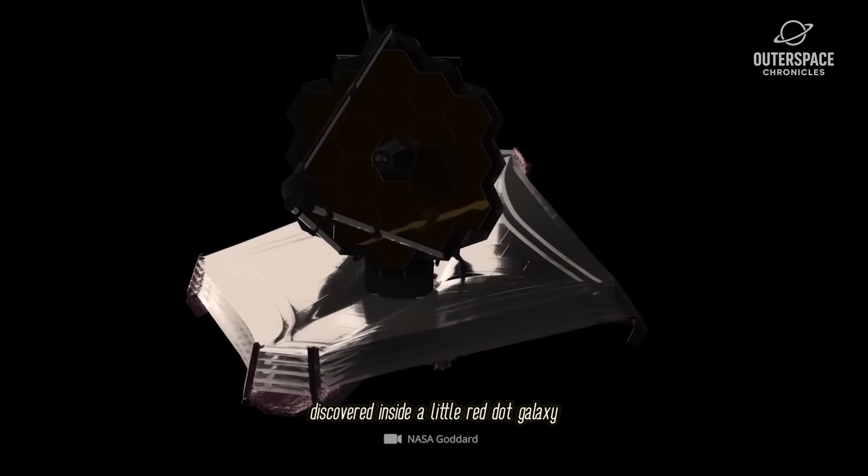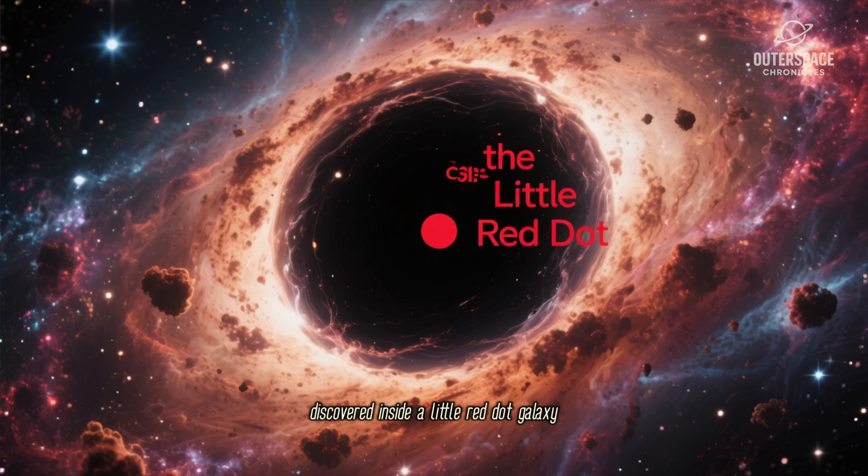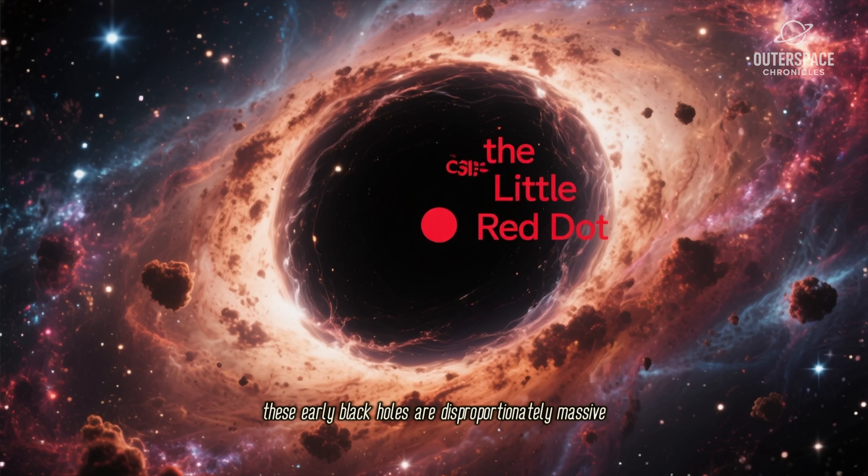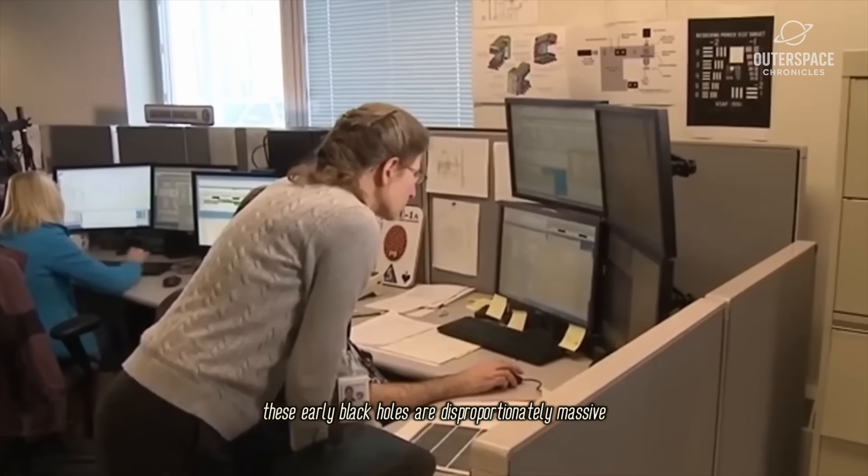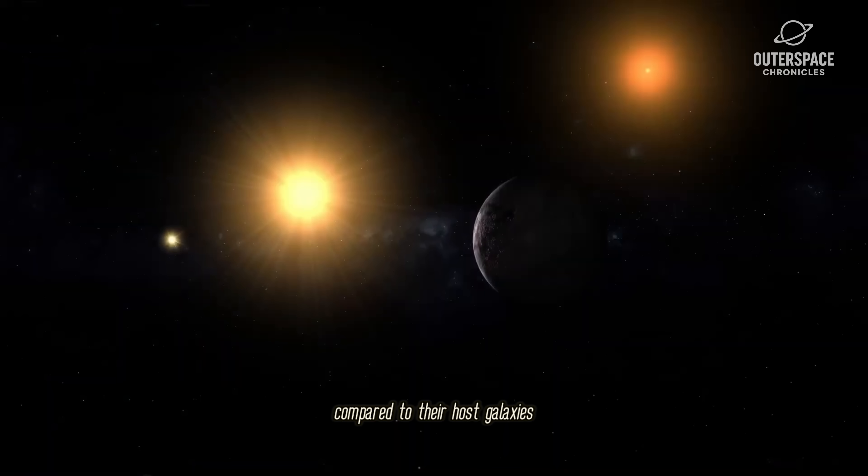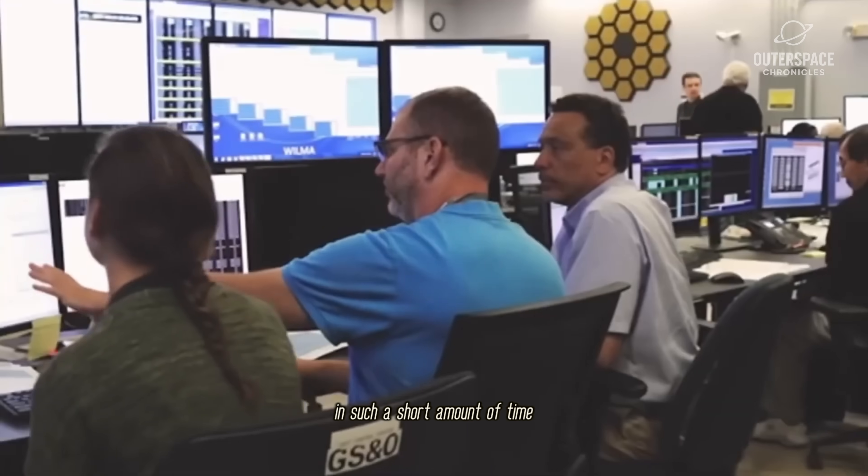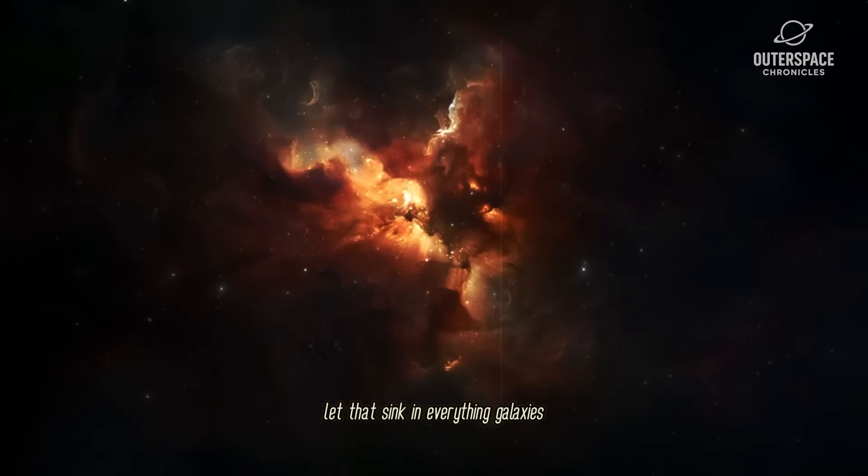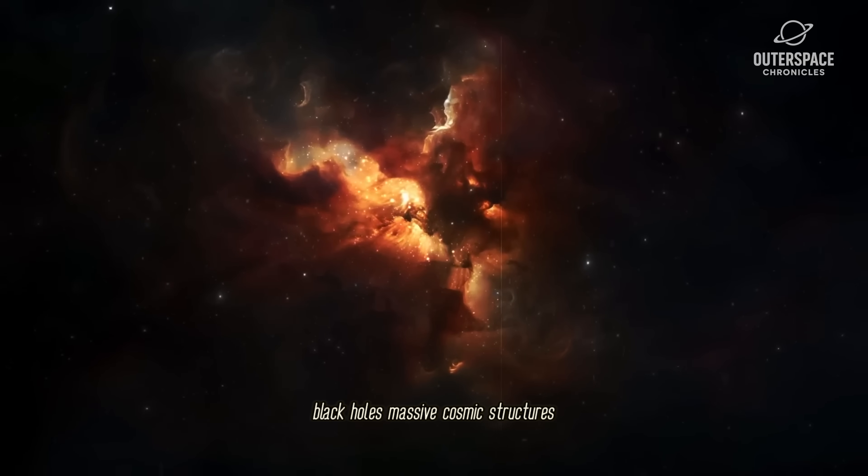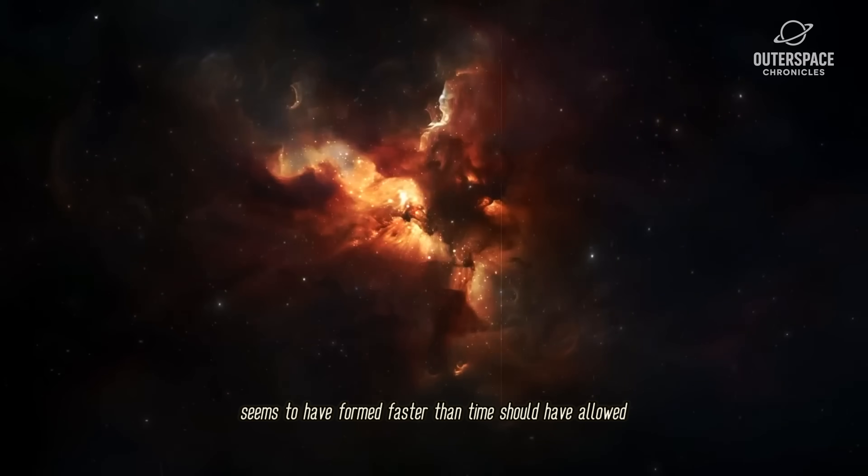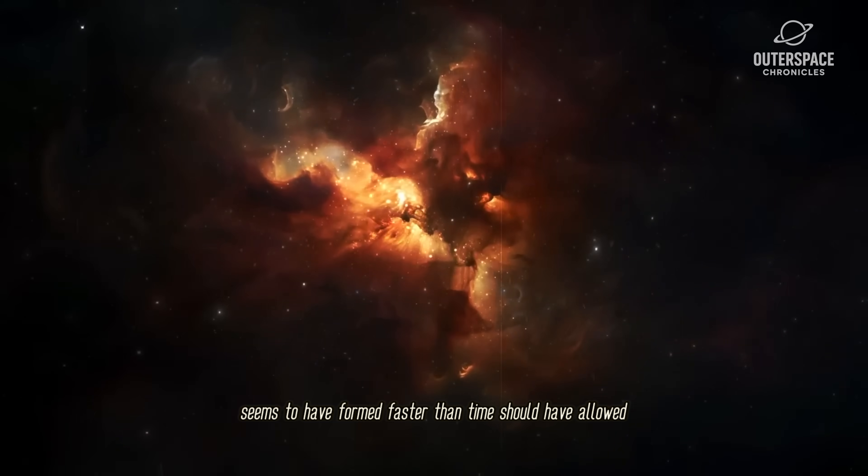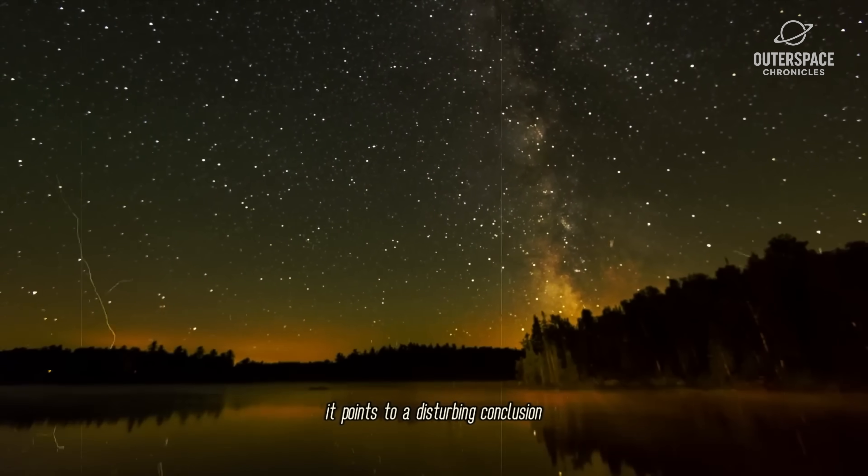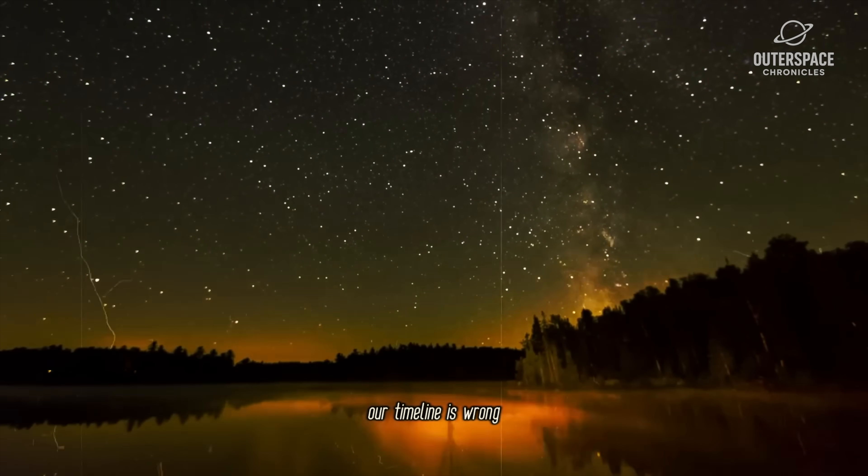These early black holes are disproportionately massive compared to their host galaxies, far larger than our theories can account for in such a short amount of time. Let that sink in: everything—galaxies, black holes, massive cosmic structures—seems to have formed faster than time should have allowed. It points to a disturbing conclusion: our timeline is wrong.